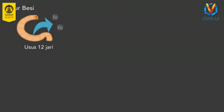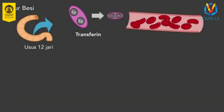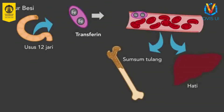Untuk dapat memahami istilah-istilah di atas, mari kita pelajari sekilas mengenai daur besi. Besi masuk ke dalam tubuh melalui makanan yang mengandung besi seperti daging merah, hati, dan sayur-sayuran hijau. Besi diserap usus dan kemudian besi akan berikatan dengan protein transport yang bernama transferrin. Dengan berikatan pada protein tersebut, besi dapat masuk ke dalam aliran darah dan dibawa ke organ lain yaitu hati dan sumsum tulang. Di sumsum tulang, besi akan disimpan dalam bentuk feritin.